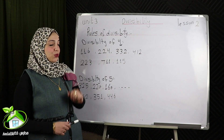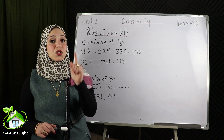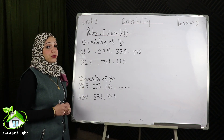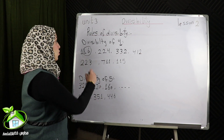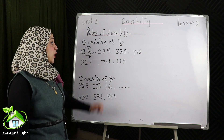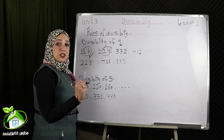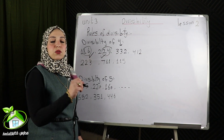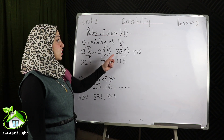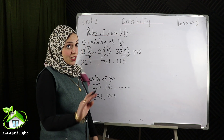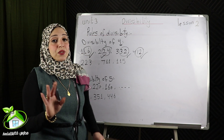Divisibility of 4. If I want to know if a number is divisible by 4 or not, I determine the tens and ones together. For example, 116: I determine the tens and ones together as 16. 16 is divisible by 4, so 116 is also divisible by 4. 224 is also divisible by 4. 332: the tens and units together are 32, and 32 is divisible by 4, so 332 is also divisible by 4. The last one: 412 — 12 is divisible by 4, so 412 is divisible by 4 without doing the division operation.